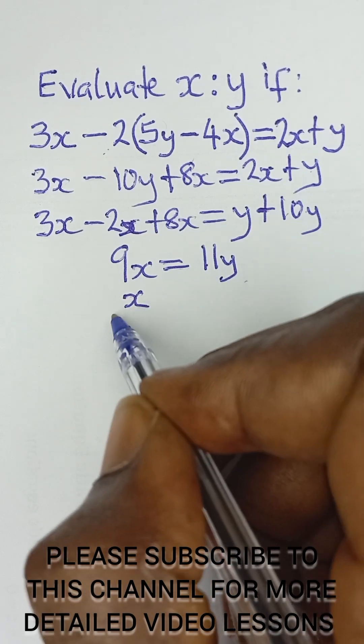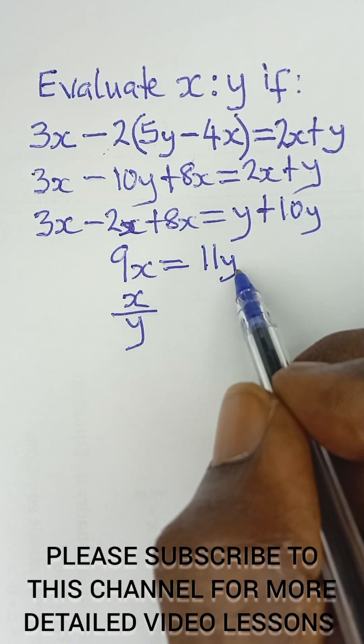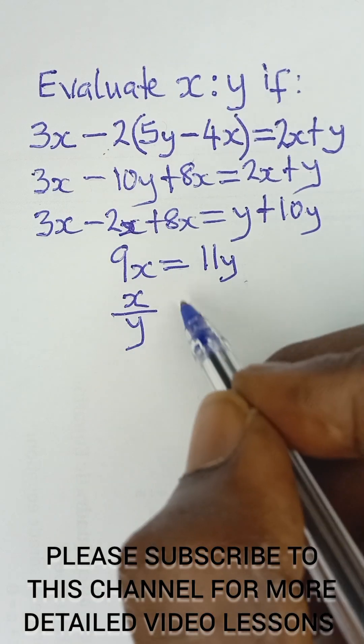So now the trick here is I'm taking x divided by y, x on the left hand side divided by y on the right hand side, it will be equal to...